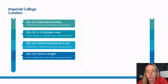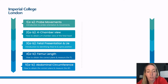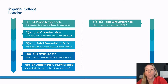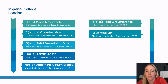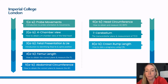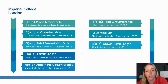Then we look at femur length — how to obtain the correct plane and accurately measure it. Then abdominal circumference — how to obtain the correct plane and perform an accurate measurement. We then move on to head measurements: obtaining the transventricular plane and measuring the head circumference and BPD, then the transcerebellar plane and measuring the TCD. Then early pregnancy: how to perform a crown rump length, how to date a pregnancy using CRL, and when to use this versus other alternatives for dating at different gestations.